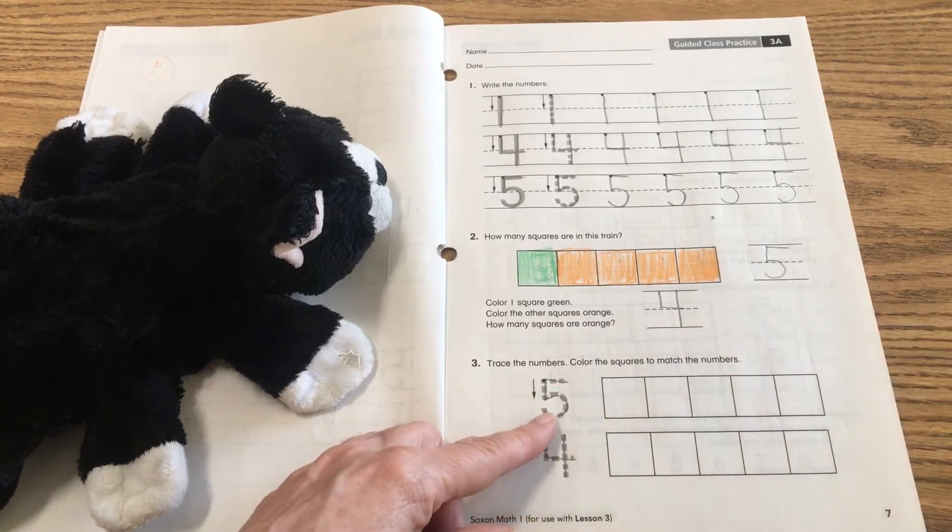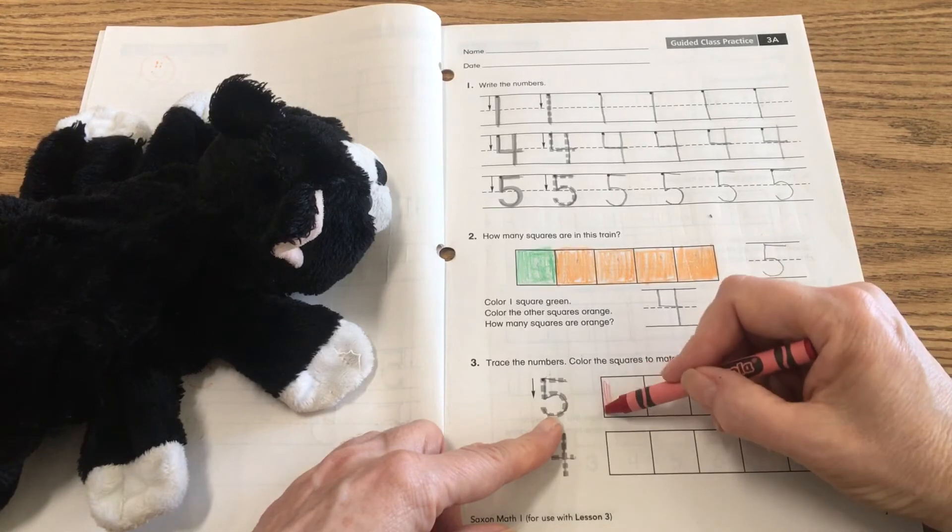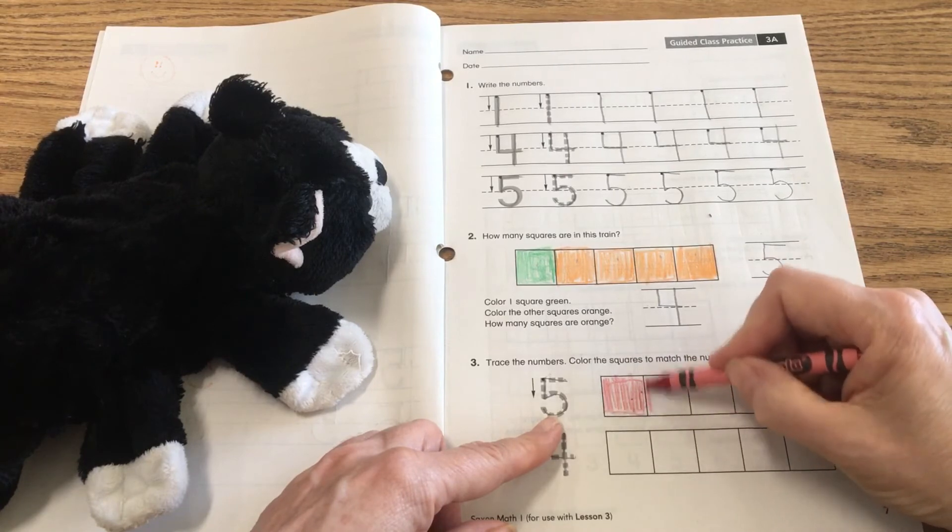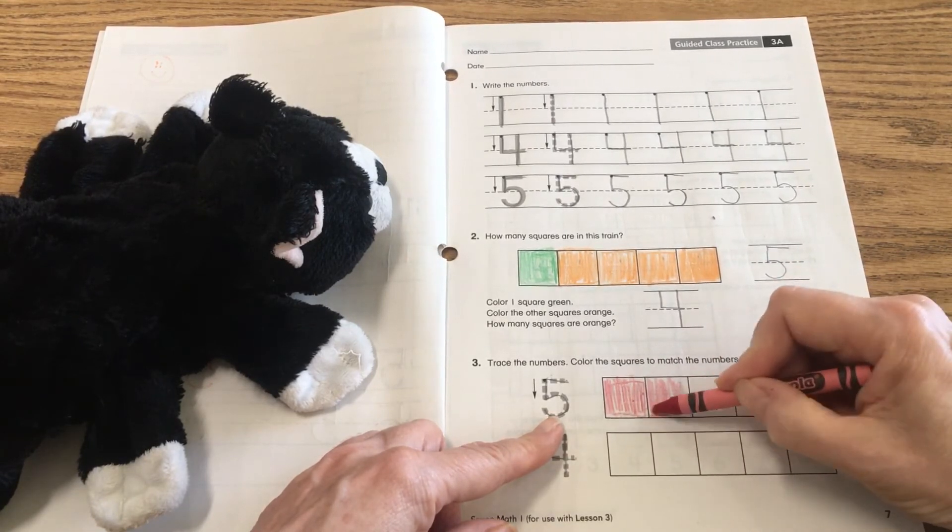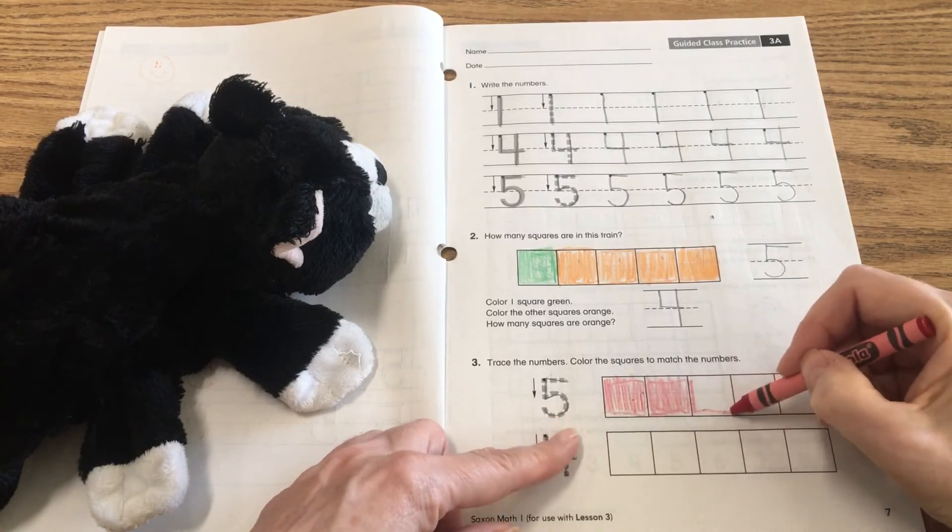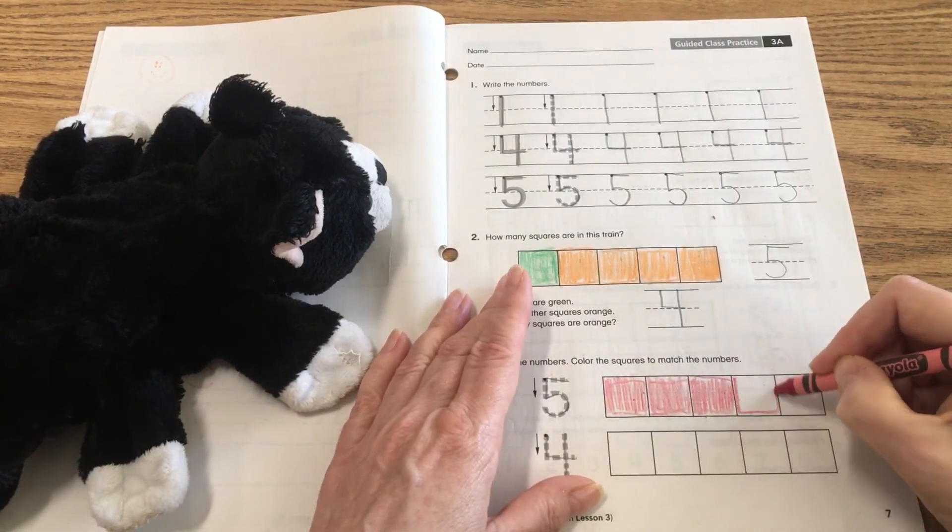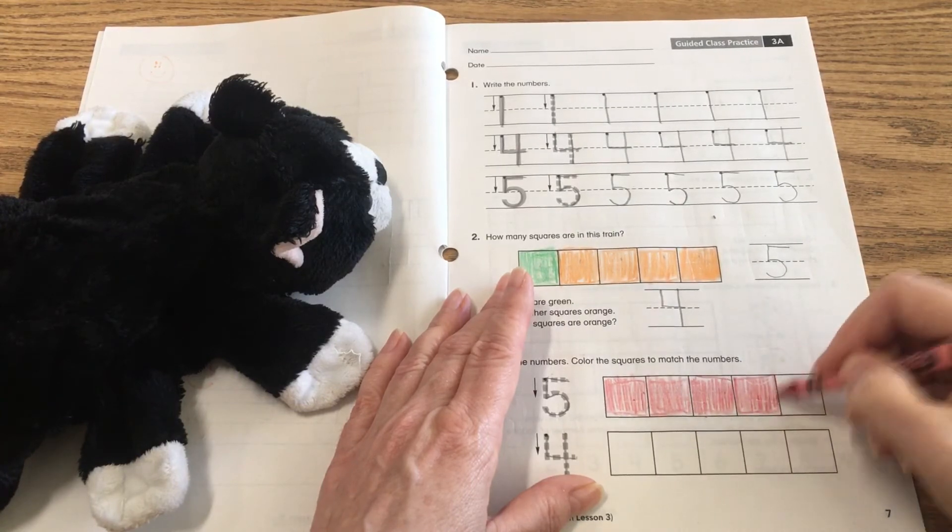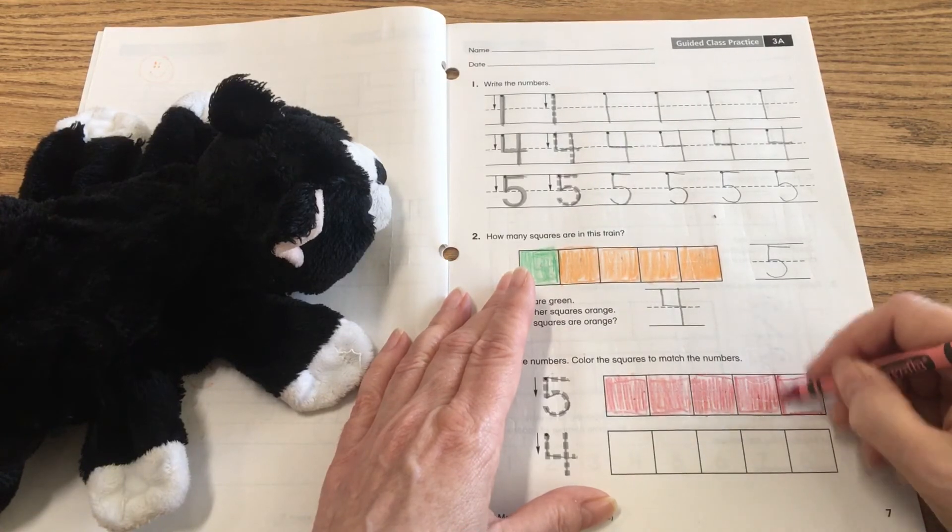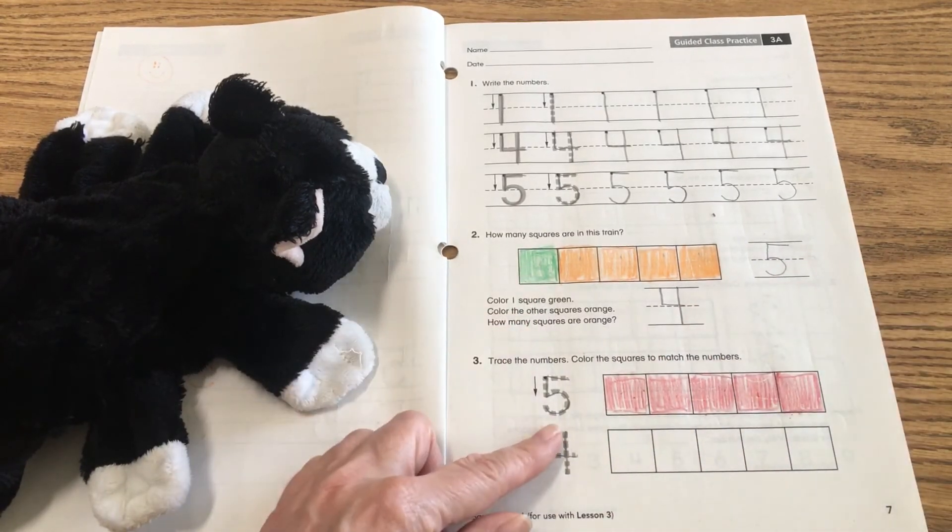And it says color the squares to match the numbers. And you can choose any color you want. So if it says five, I'm going to count while I color. There's one, two, three, four. And I'm tracing the square just because it's easier for me to stay in the line if I trace the shape. So sorry, that's five. One, two, three, four, five. Okay. So I colored five to match that number.